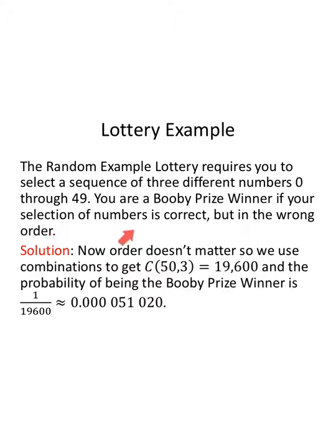You're a booby prize winner if your selection of numbers is correct but in the wrong order. So now order doesn't matter. So we could use combinations. The combinations of the 50 numbers that we have, 0 through 49, we want 3 of them. Now there's only 19,600 different ways that can happen. And so we have a 1 out of 19,600. It's better, but not a lot. I still wouldn't play this one.